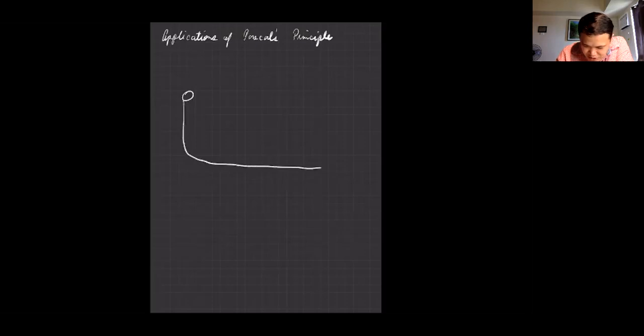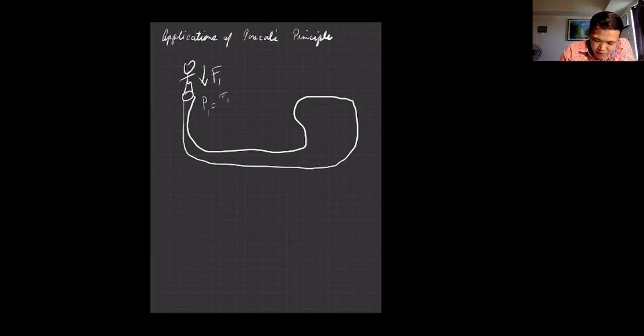So this is like the input plunger and the output plunger. There's a fluid. So let's say you apply a force here, so if you have pressure f1, we have pressure 1 equals f1 over a1 in a smaller area.